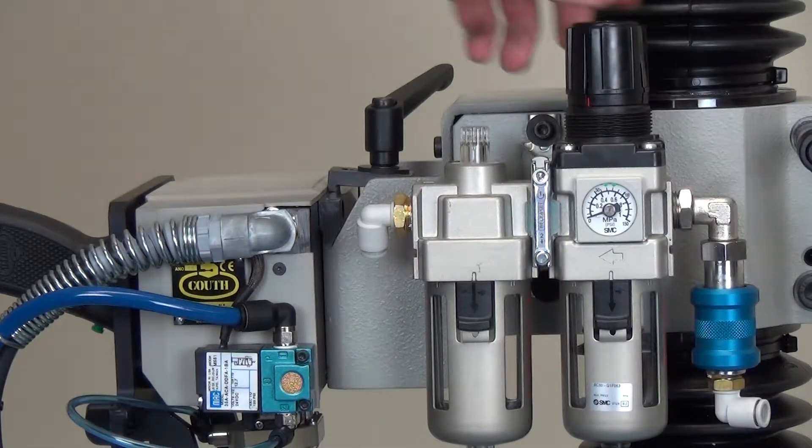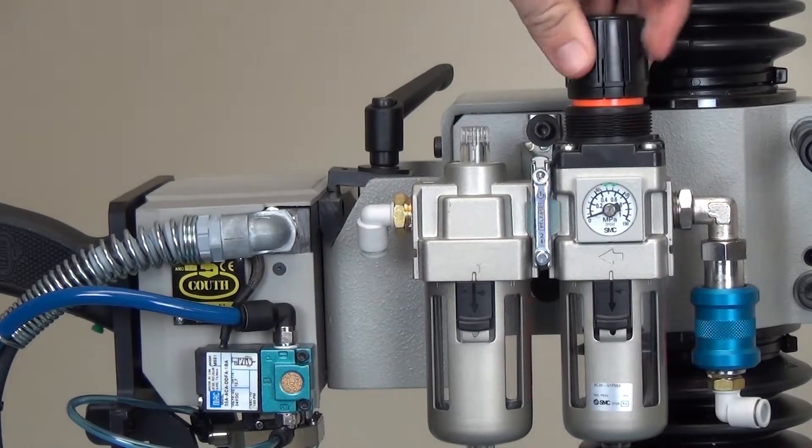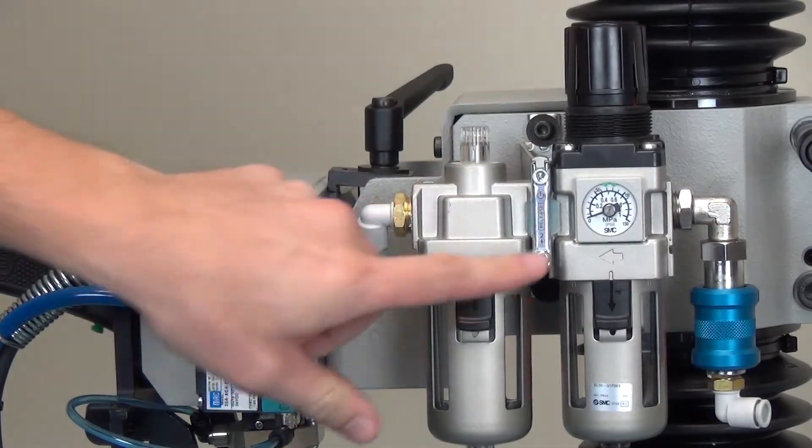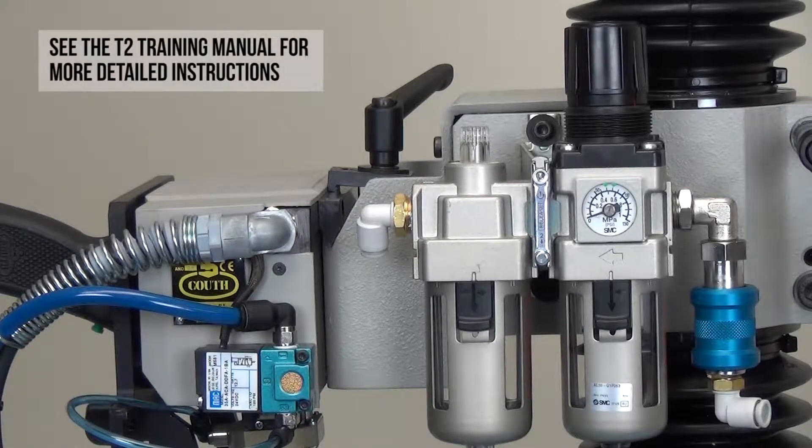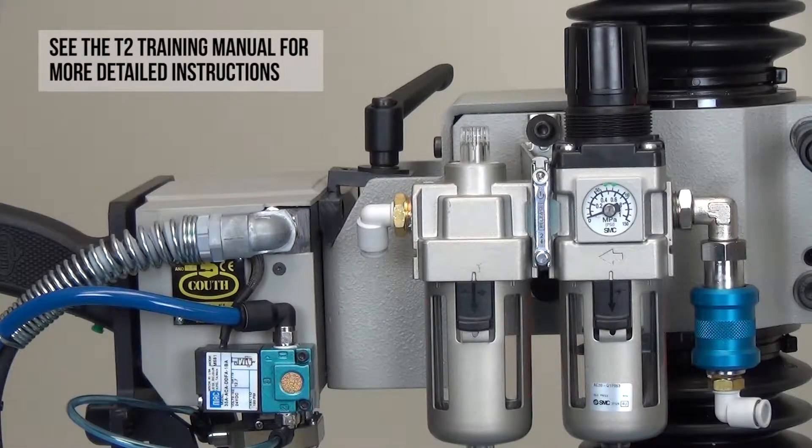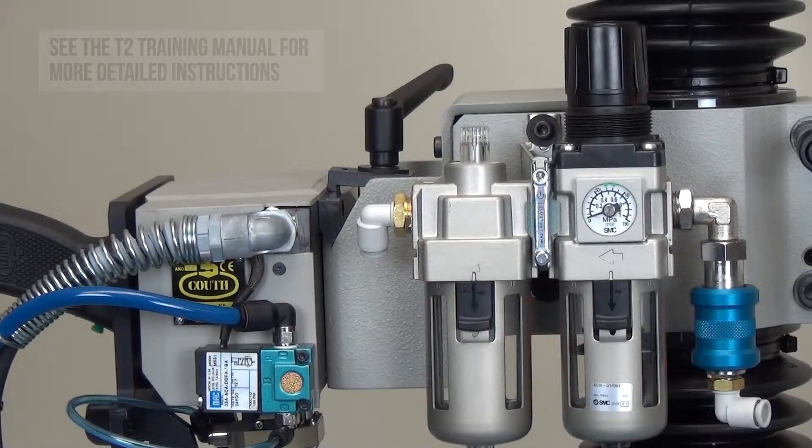Check the air pressure. If mark is shallow, increase the pressure on the filter regulator lubricator, or FRL, up to a maximum of 110 psi. The depth can also be increased by slowing the speed of the marking head.